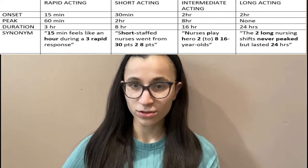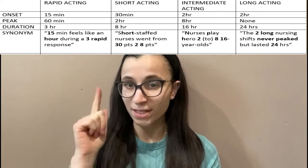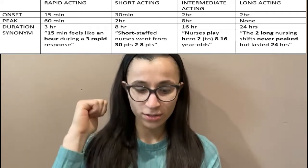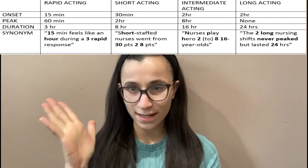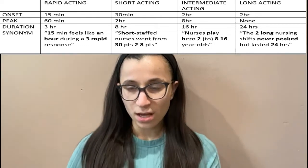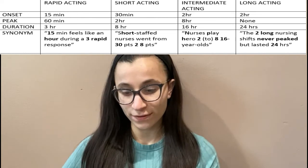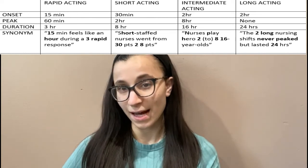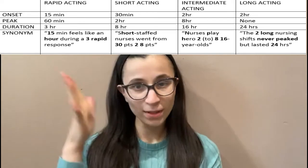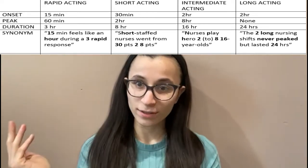Intermediate acting — 'Nurses play heroes to eight 16 year olds' — NPH is the medication, onset two hours, peak eight hours, duration 16 hours. Long acting — 'The two long nursing shifts never peaked but lasted 24 hours' — onset two hours, no peak, duration 24 hours.